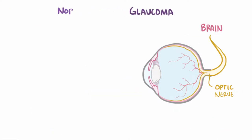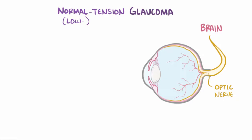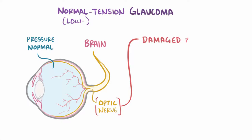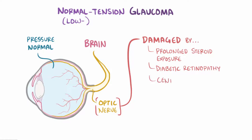Finally, there's normal tension glaucoma or low tension glaucoma. In this type, there's normal pressure in the eye, and the optic nerve is damaged by an entirely different process, such as prolonged steroid exposure, diabetic retinopathy, central retinal vein occlusions, or eye trauma.